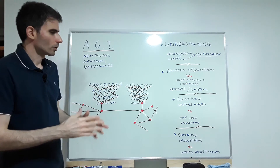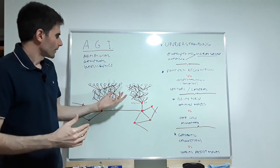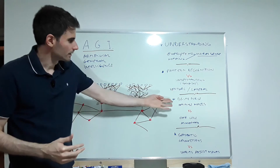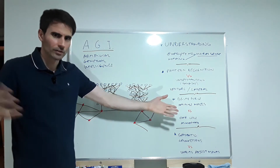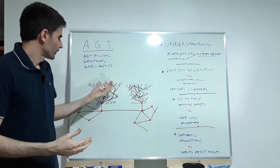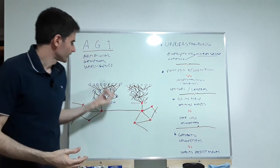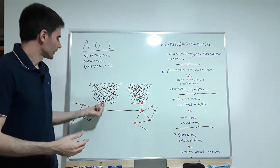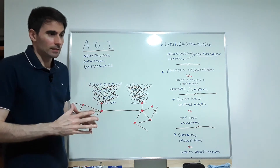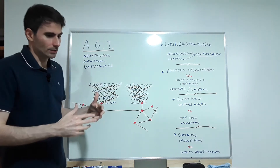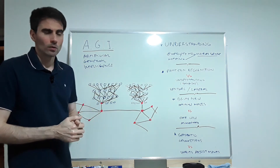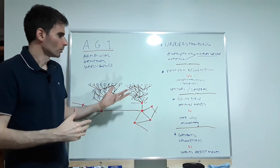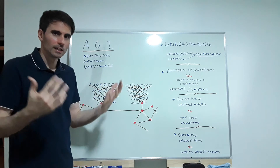Neural nets can recognize patterns after being trained with brute force on millions of examples. They adjust the weights of artificial neurons and say, 'it's a cat.' But it's all computer code — there's no semantics, no real thinking.